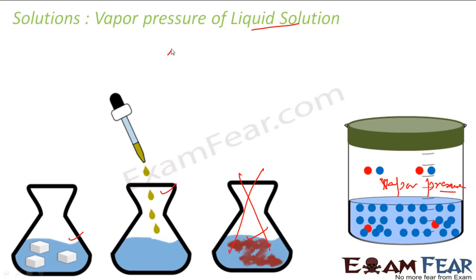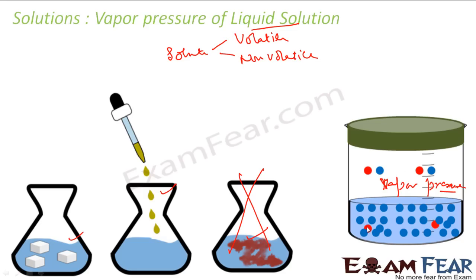Now the solute itself can be of two types: it can be volatile or it can be non-volatile. When we talk about vapor pressure, the volatile or non-volatile nature of the solute will make a difference. If the solute is volatile, it may increase the vapor pressure. If the solute is non-volatile, it will decrease the vapor pressure.